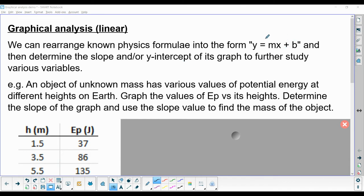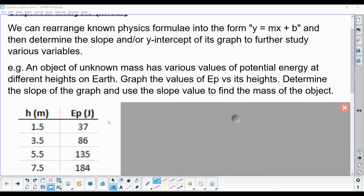You may remember from math that the y equals mx plus b format is also known as the slope-intercept format. So let's say we have an object of unknown mass, and it has various potential energy values at different heights on Earth. You're asked to graph potential energy versus height, determine the slope of the graph, and then use the slope value to find the mass of the object.